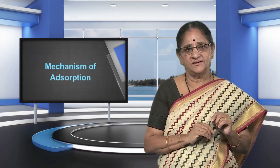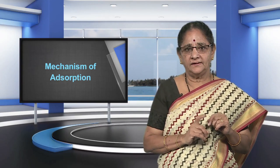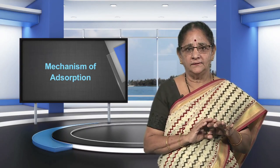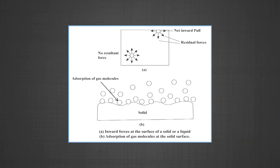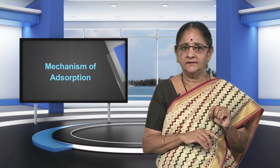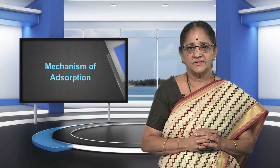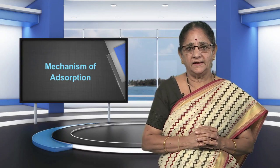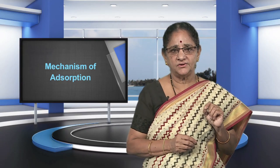We now discuss the mechanism of adsorption. Adsorption arises due to the fact that the surface particles of the adsorbent are not in the same environment as the particles inside the bulk. Inside the adsorbent, all the forces acting between the particles are mutually balanced. But on the surface, the particles are not surrounded by atoms or molecules of their kind on all sides, and hence they possess unbalanced or residual attractive forces. The molecules at the surface have higher energy than those in the bulk. This extra energy per unit surface area is called surface energy. The residual attractive forces of the adsorbent are responsible for attracting the adsorbate particles on its surface.